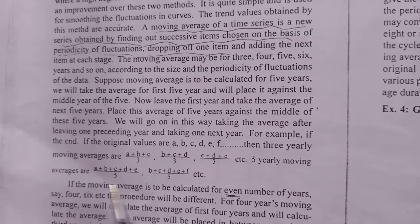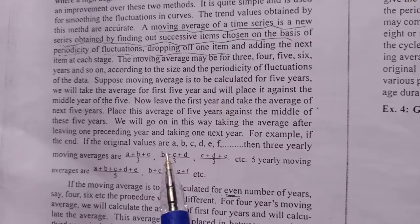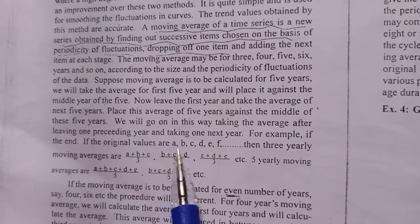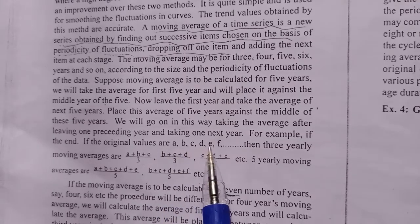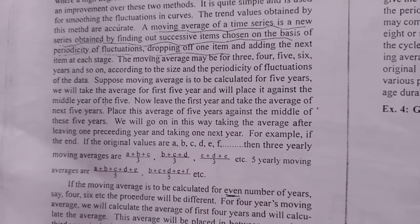I'm going to get the 5-yearly moving average. For 5-yearly moving average, the formula is A plus B plus C plus D plus E, divided by 5.